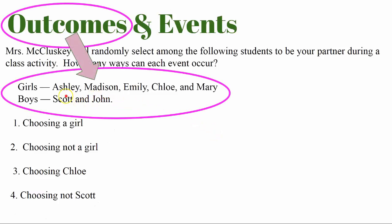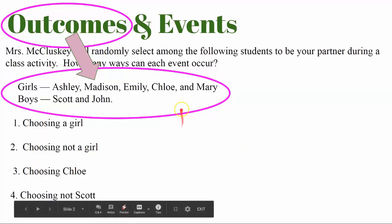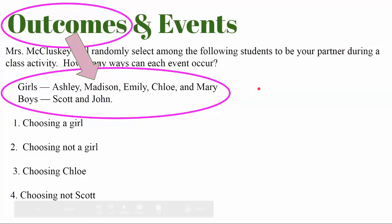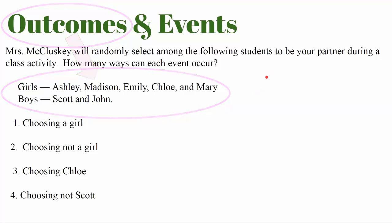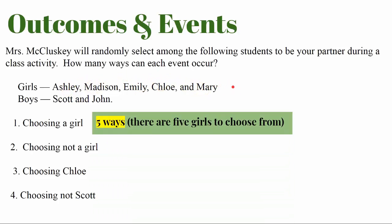Outcomes — these are the possible outcomes: the girls that she'll be selecting from and the boys she'll be selecting from. In how many ways can these four events happen? Go ahead and pause the video if you haven't completed this task, and hit play when you're ready to see the answers. Let's first review choosing a girl: there are one, two, three, four, five girls to choose from, so there are five ways for this event to occur.